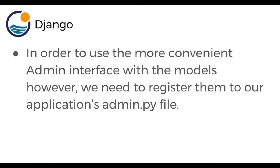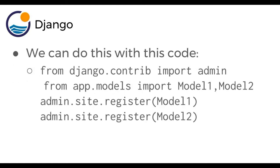In order to use the more convenient admin interface with the models, we need to register them to our application's admin.py file. We can do this with the following code: we say from django.contrib import admin, and then from app.models — or whatever app happens to be named — you import the actual models, model1, model2. In those previous examples, that would be things like topic or web page, date accessed, etc. And then we say admin.site.register and you pass in the model as an argument.